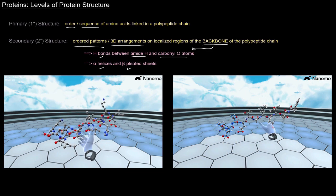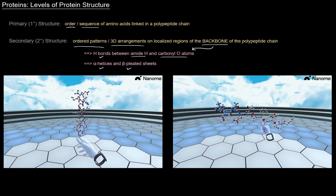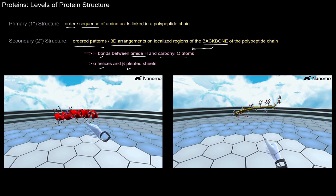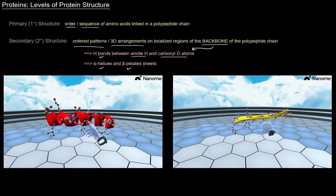This does not include the side chains because there can be hydrogen bonds between the side chains or the R groups of amino acids. Though that's not described or referred to by secondary structure. That instead is tertiary structure.